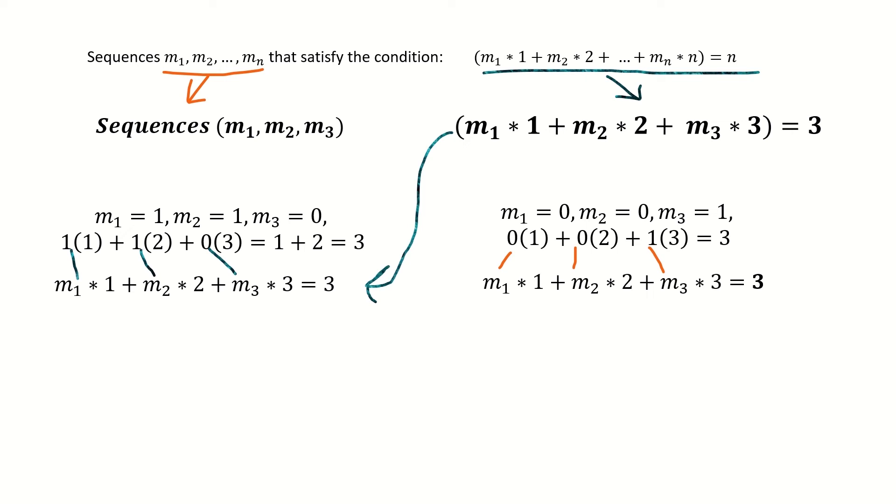And the last sequence of m's that satisfies the condition when n equals 3 is m1 equals 3, m2 equals 0, and m3 equals 0. This corresponds to 1 plus 1 plus 1 which equals 3.